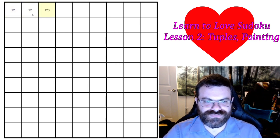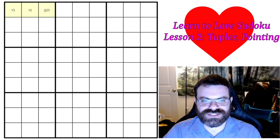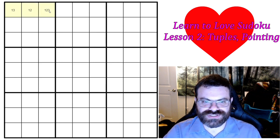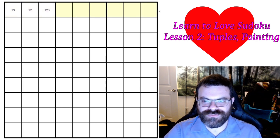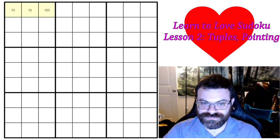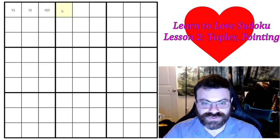Now for a triple, I could do something like this where this is a 1, 3, this is a 1, 2, and this is a 1, 2, 3. And this is still a naked triple because between these three cells, only 1, 2, and 3 are possible. So we still can't repeat 1, 2, 3 in the rest of the row - that's still a triple. We could go all the way up to octuple, but I'm going to go over hidden tuples next, and I'll explain why we really only have to go up to quadruple.